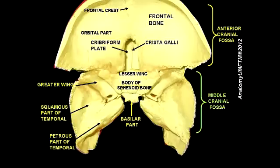What cranial nerves pass at the level of the middle cranial fossa through the sphenoid bone? Cranial nerves 2 to 6 pass through this area.